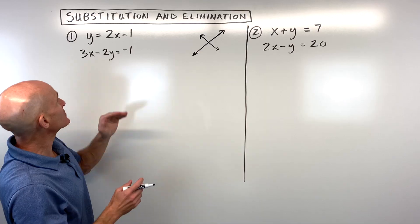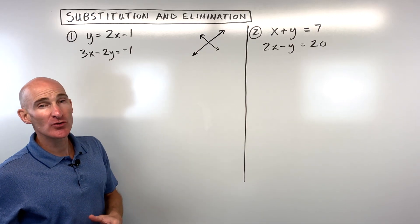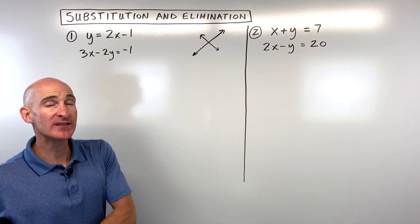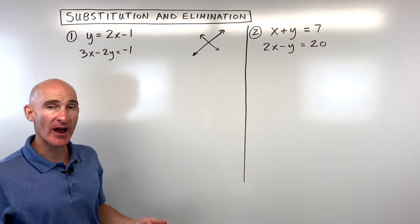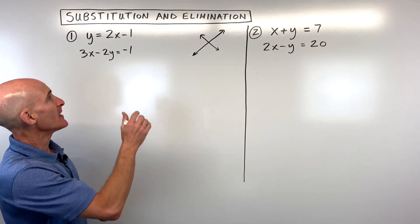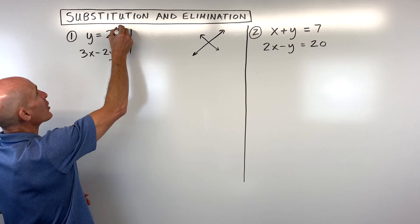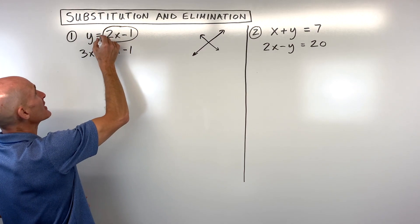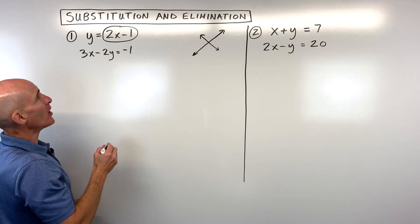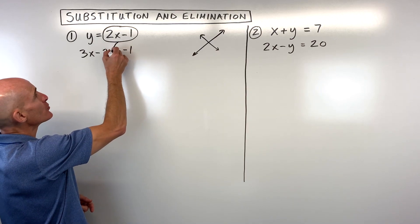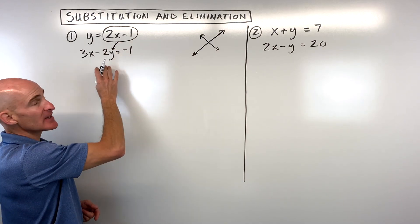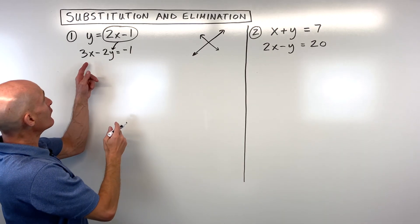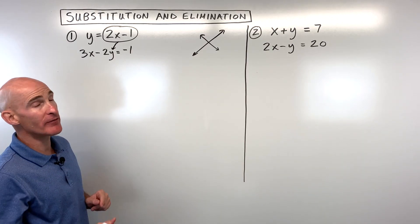So if we're going to use the substitution method, the first thing you want to do is get one of the variables by itself on one side of the equal sign. You either want to solve for x or you want to solve for y. In this first example, you can see that we already know what y is — we've already got y by itself. So what we're going to do is put that in place of y in the second equation, so we'll have one equation involving just one variable.